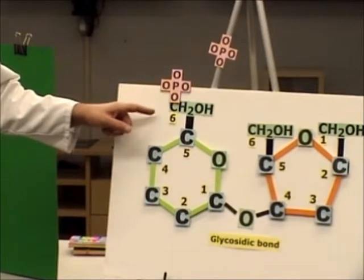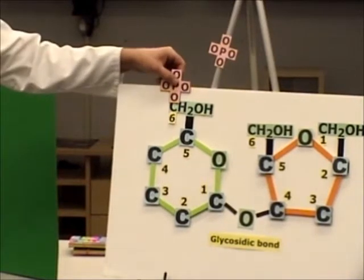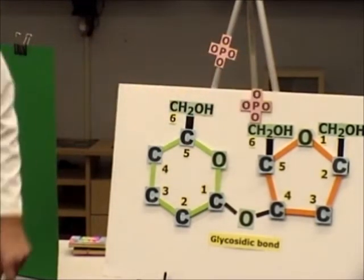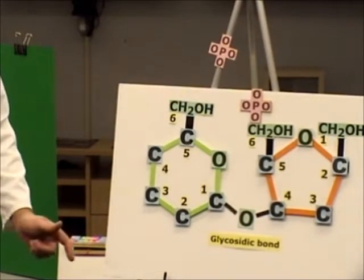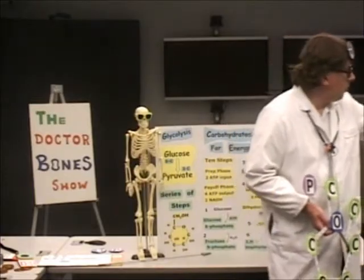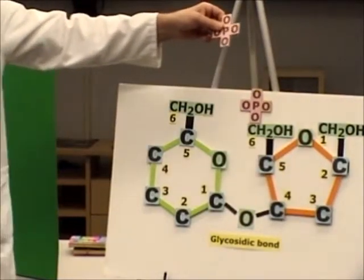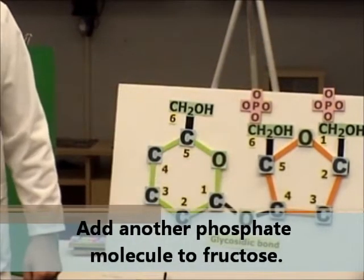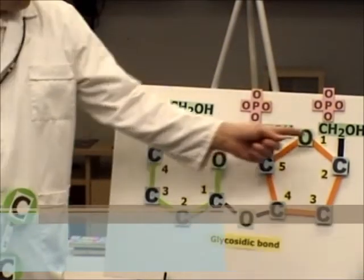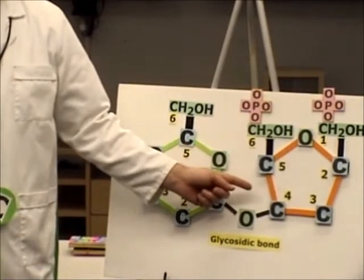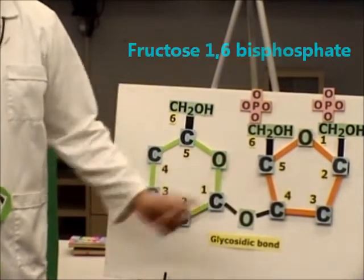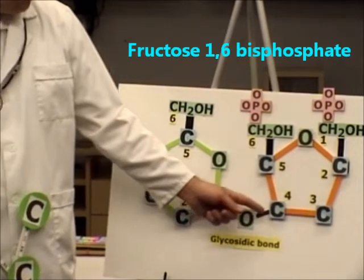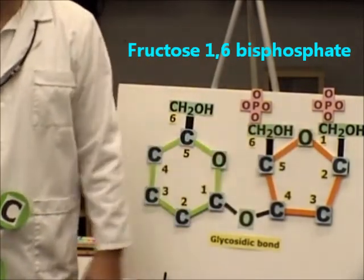We went from glucose 6-phosphate in a rearrangement to fructose 6-phosphate. Now the next step in glycolysis is to add an additional phosphate to fructose. It's going to be fructose 1,6-bisphosphate — not biphosphate, but bis, B-I-S. So fructose 1,6-bisphosphate.